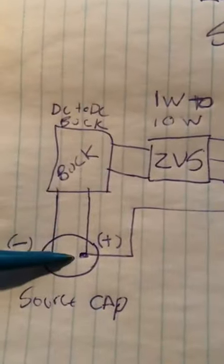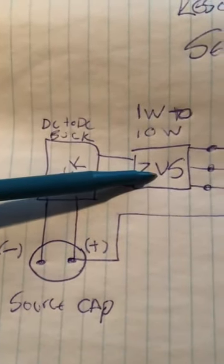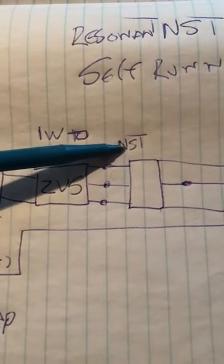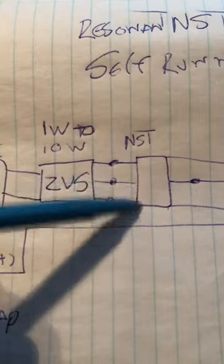Source energized from a 9 volt. The buck converter comes online. Powers the resonant ZVS. The ZVS then powers the resonant NST in resonance based on the turning ratio on the primary. The secondary is irrelevant.